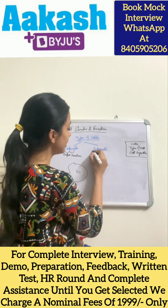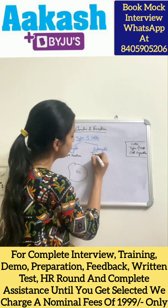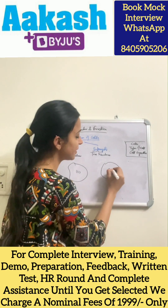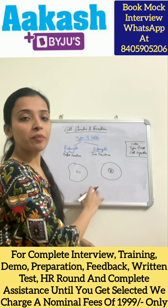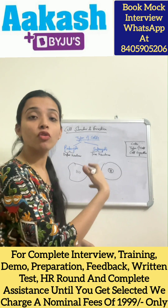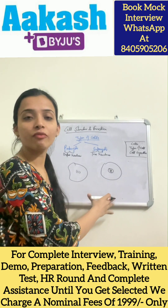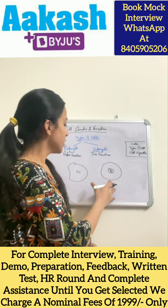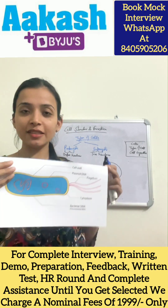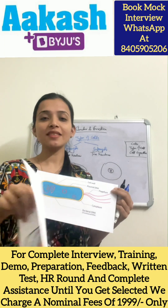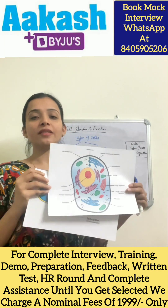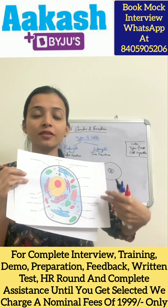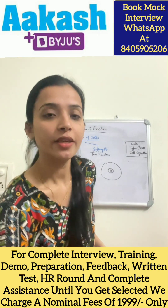In eukaryotic cells, 'eu' means true and 'karyo' means nucleus — so a true nucleus is present, and inside the nucleus DNA is present. Comparing these two: eukaryotic cells are more complex, larger in size, and have membrane-bound organelles and a nucleus. Prokaryotic cells are simple; eukaryotic cells are complex with many structures present.